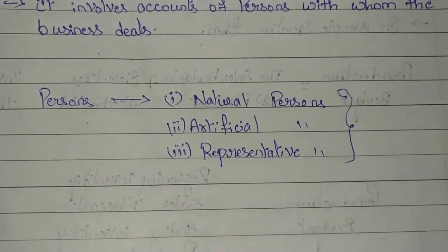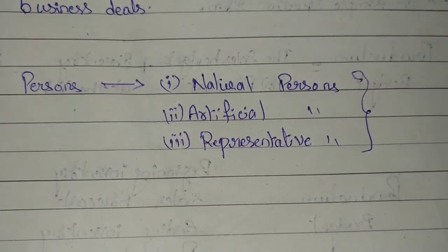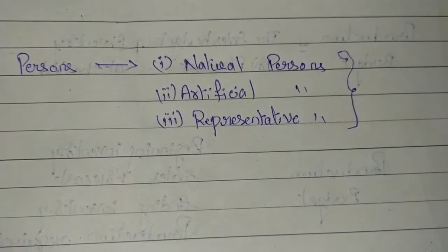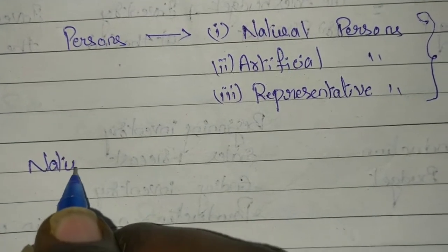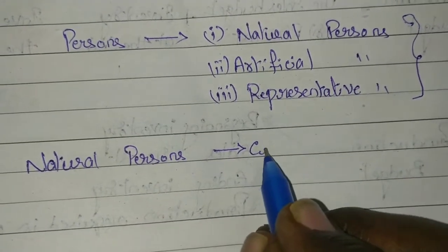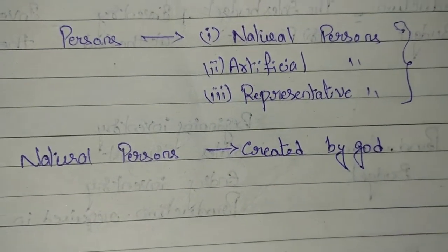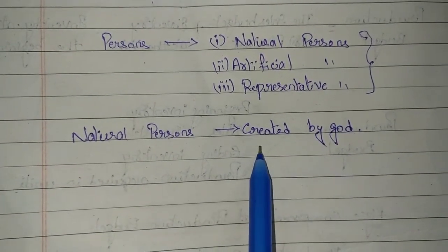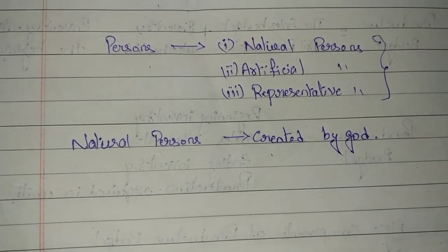Let us discuss these three types of persons in detail. Natural persons are those persons who are created by God — that is, human beings. All human beings will be considered as natural persons because they are the creation of God.